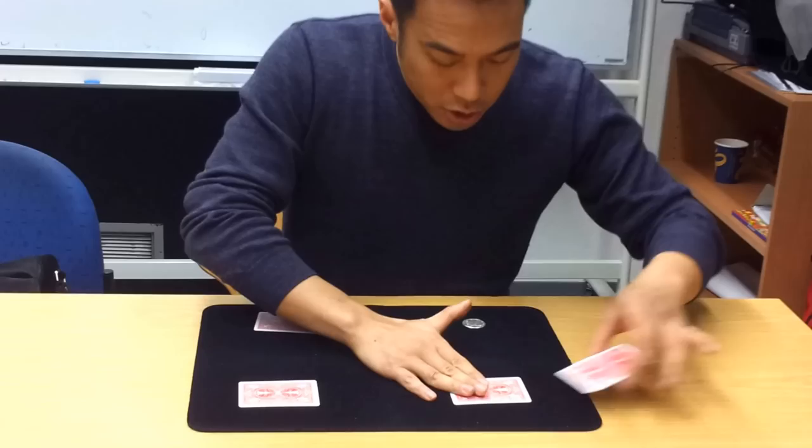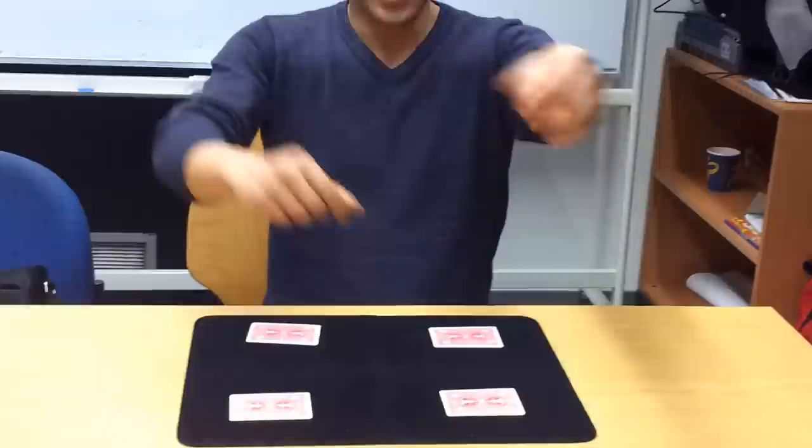With two hands, that's what it looks like. I'm now going to do it with one hand. Now, any magician around the world will tell you, this is true, that this trick cannot be done with one hand. It's impossible. So I'll do it for you now.